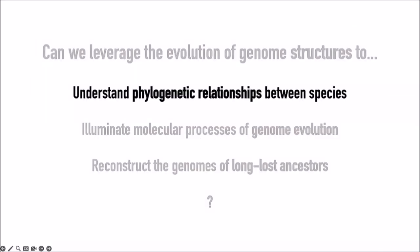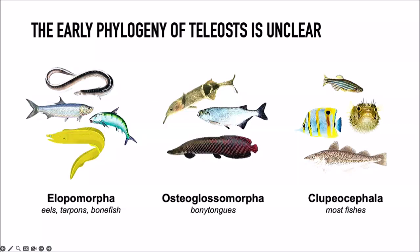Can we use the structure of genomes to understand the phylogenetic relationship between these three groups? For the purposes of this talk, I'll call them the eels (elopomorphs), the bonytongues (which have calcification in their tongue), a smaller group with few extant species, and the clupeocephalans — basically almost all other fish you know. There are only three possible branching topologies: bonytongues diverge first, eels diverge first, or bonytongues and eels are sister groups.